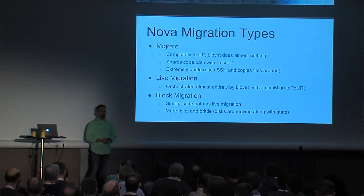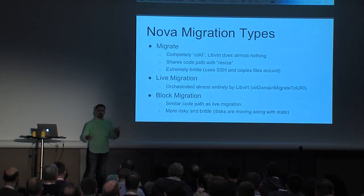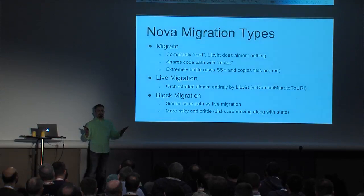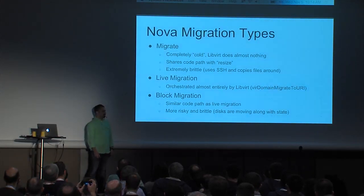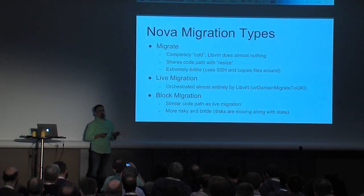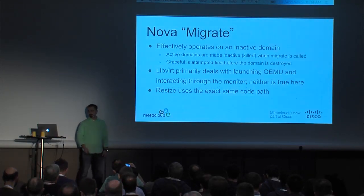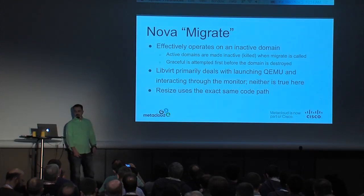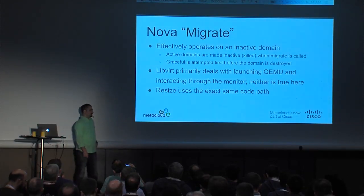With block migration, in addition to moving the state — where worst case you fail and lose runtime state — you're moving the disks around, so there's a lot more risk of losing actual data on disk. The risk is small, but it is there. Migrate operates on an inactive domain. LibVirt really couldn't do anything during a migrate even if it wanted to, because LibVirt is only intended to run on active domains where the monitor is available — a socket becomes available the moment a QEMU instance is launched, and at the point where QEMU is down, there's no longer that socket.